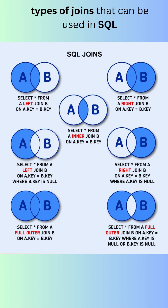The left table is called A and the right table is called B. The join condition is that the key column in table A is equal to the key column in table B. The result of the join is that all rows from table A are returned, even if there are no matching rows in table B.